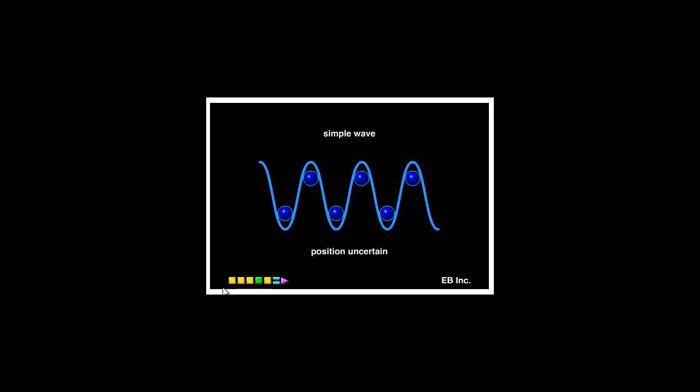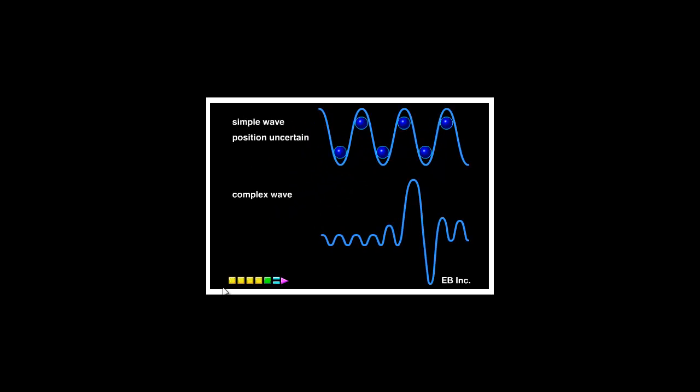In the complex wave shown here, some of the undulations of the wave are much larger than the others. This type of wave is made by adding together many simple waves with different wavelengths, which means that there are many velocities that are possible. However, the electron is most likely to be found near the position of the high peaks. This electron is localized. We can determine the position, but not the velocity. Hence, the uncertainty.